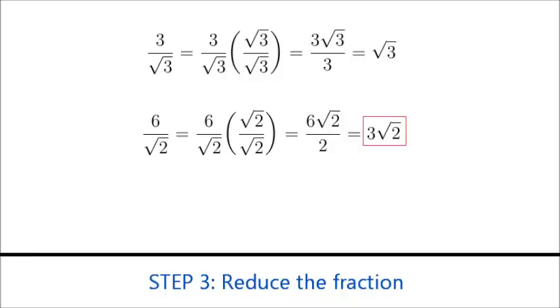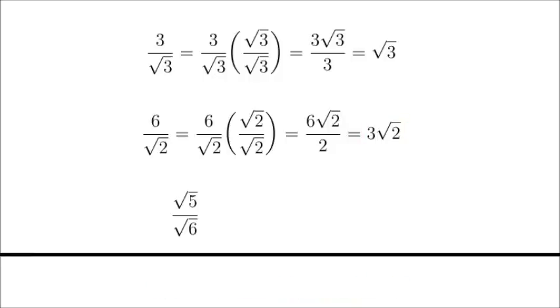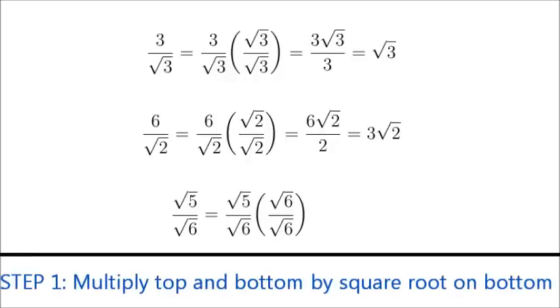Let's do one more example. Here we have the square root of 5 divided by the square root of 6. Now, this is a little trickier than the last two that we've done, because we have the square root on top. Well, let's start out the same way. We'll multiply top and bottom by the square root of 6.